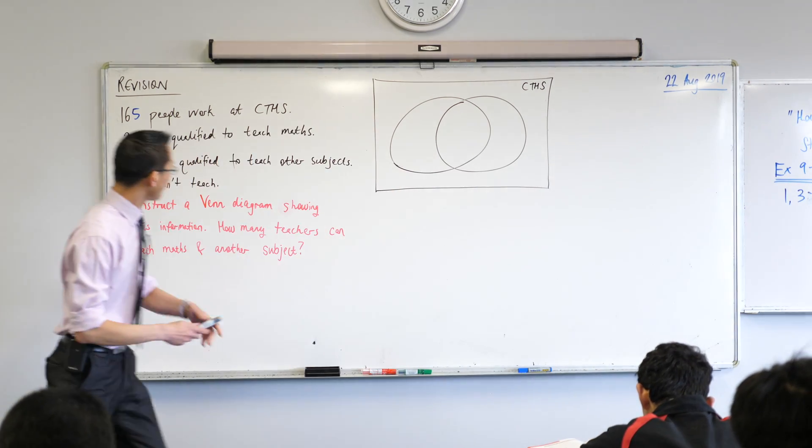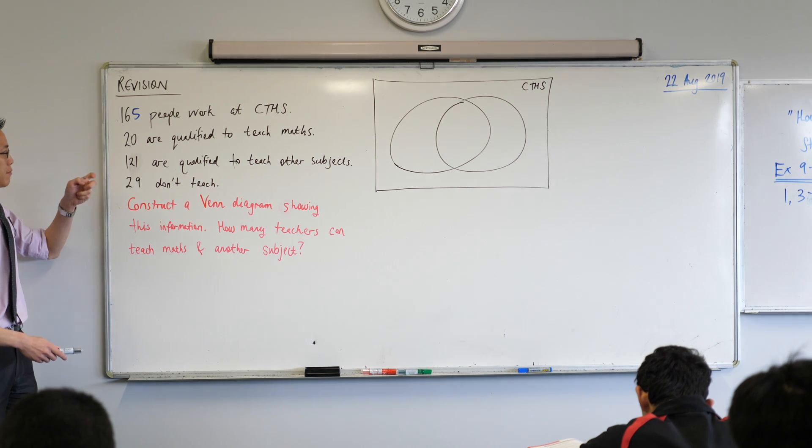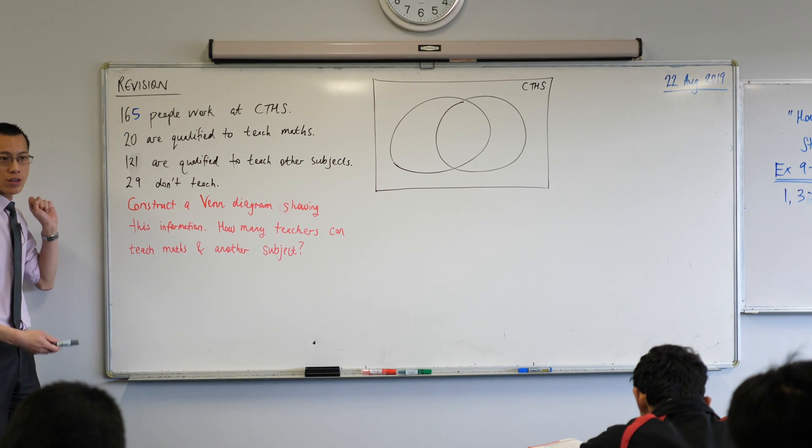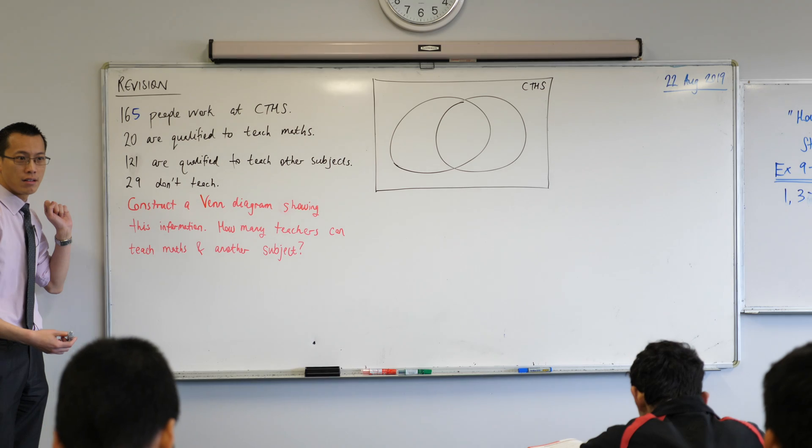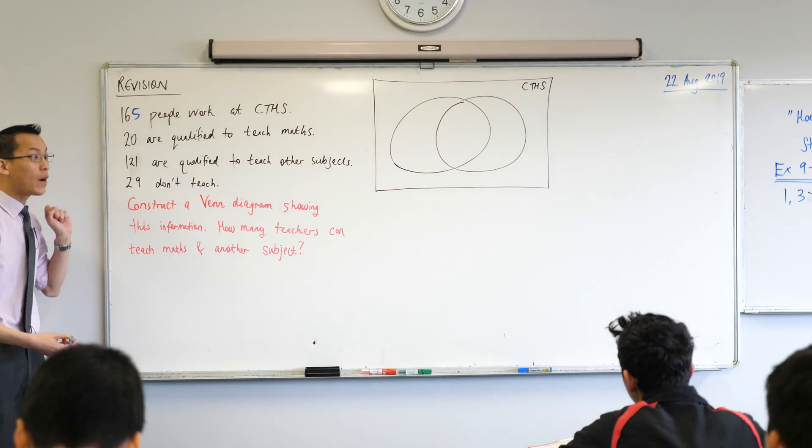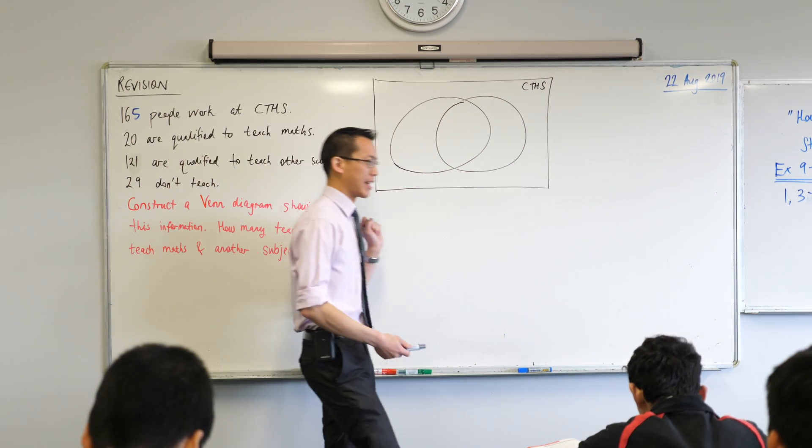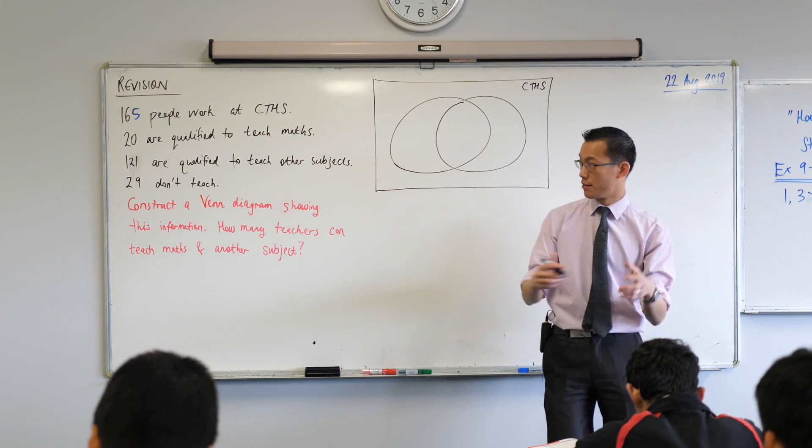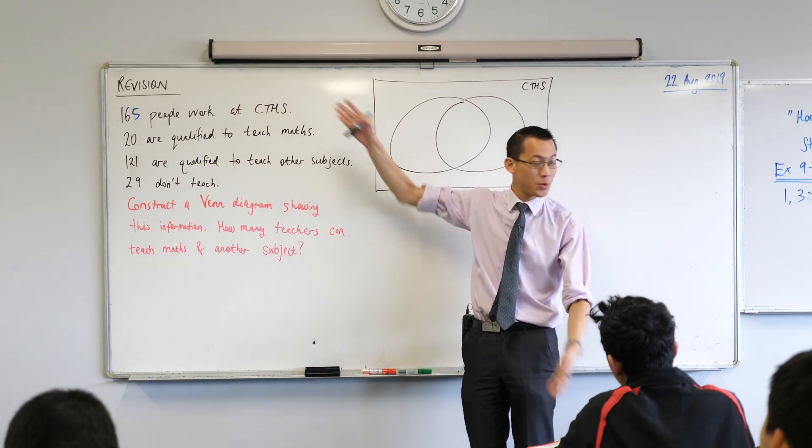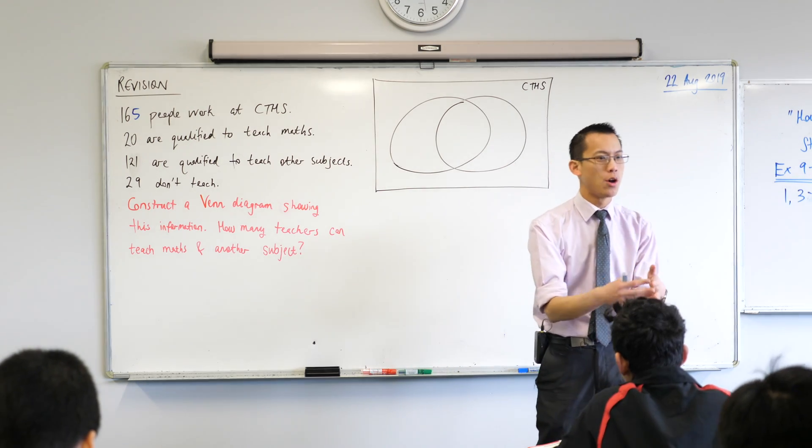When you look at 20 plus 121 plus 29, what do you get? 170. So you're like hold on, I've got 170 when I add up but I don't have 170 bodies to assign, so there must be some overlap.